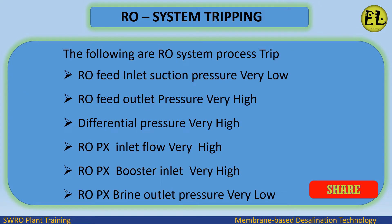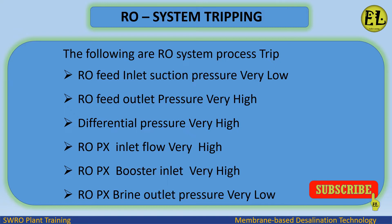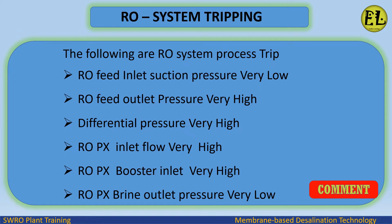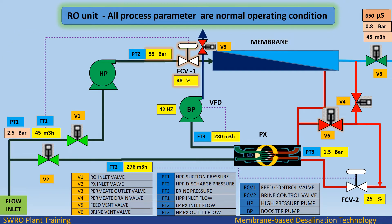The following are RO system process TRIPs: RO feed inlet suction pressure very low, RO feed outlet pressure very high, differential pressure very high, ROPX inlet flow very high, ROPX booster inlet very high, ROPX brine outlet pressure very low. RO unit all process parameters are in normal operating condition.